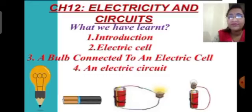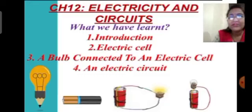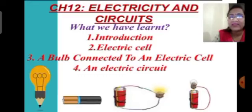In the introduction, we learned the importance and various purposes of electricity. Then we saw the design and parts of an electric cell and a torch bulb. We learned through an activity how a bulb is connected to an electric cell. In the previous online class, we understood what an electric circuit is and in what position of a circuit the bulb glows.